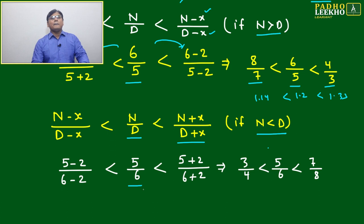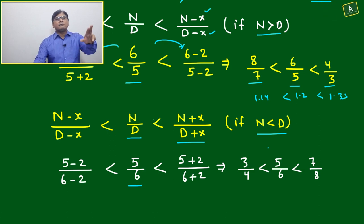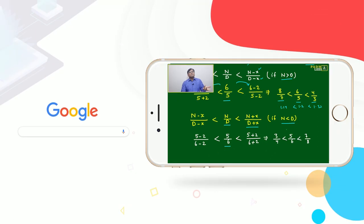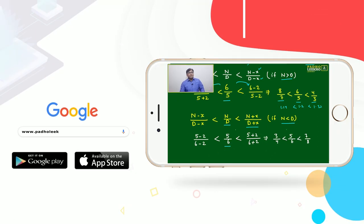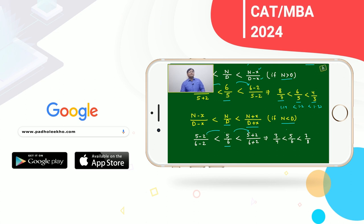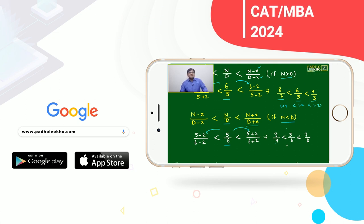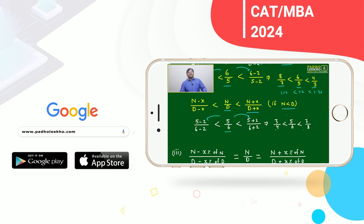Let's look at one example for the N less than D case. We reverse it: instead of Ramesh to Soham, now take Soham to Ramesh's salary — that gives 5 by 6. Adding and subtracting 2: we get 3/4 less than 5/6 less than 7/8. We can directly see the numbers confirm this order.